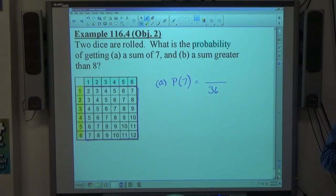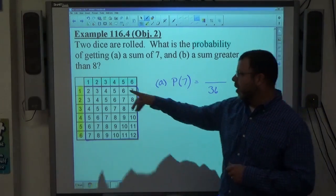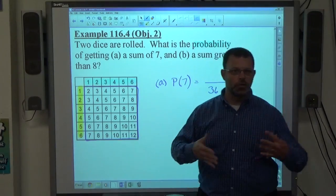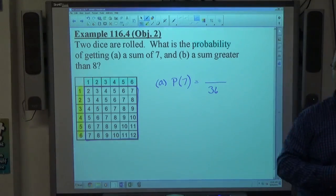Some numbers happen more often than others because there's more ways to do it. There's only one way to make 2, but there's two ways to make 3 and three ways to make 4 and so on. So those numbers are more frequent and therefore they're more likely.